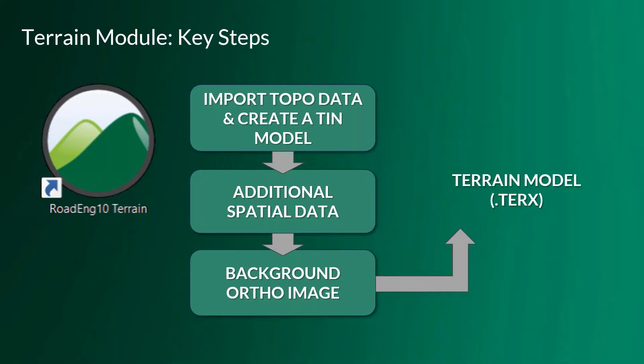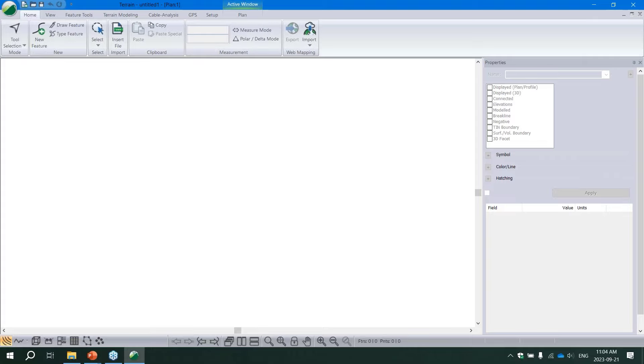You'll bring in that topo data and create a TIN model - that's the most important first step. A TIN model is a Triangular Irregular Network surface representing the original ground, saved in a terrain file (T-Rex file). We'll also cover a couple of bonus steps: adding extra spatial data for context and adding a background ortho photo into your terrain model.